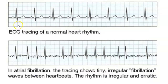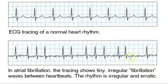Here's an EKG of normal rhythm. Notice that the QRS complex is at regular intervals. But with atrial fibrillation, the QRS complex is very erratic, and notice the absence of P waves — just inscrutable markings up and down. So this is normal EKG, and this is atrial fibrillation.